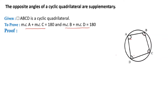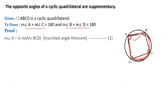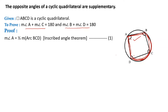In this figure, angle BAD is an inscribed angle and arc BCD is the intercepted arc. An inscribed angle is half of the intercepted arc, so the measure of angle BAD equals half of the measure of arc BCD. This is equation one.